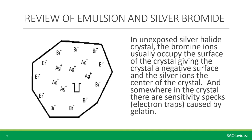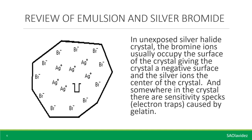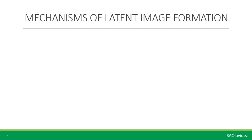In an unexposed silver halide crystal, the bromine ions usually occupy the surface of the crystal, giving the crystal a negative surface, and the silver ions occupy the center of the crystal. Somewhere in the crystal there are sensitivity specks caused by impurities in the gelatin. Now let us discuss how latent image is formed. Latent image formation is a three-stage process.